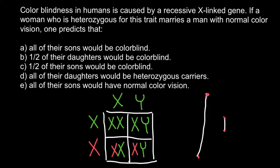Now we can answer our question. Answer A — all of the sons would be colorblind — this is not true; only 50% of the males would be colorblind. Answer B — one half of the daughters would be colorblind — still would have normal vision. Answer C — one half of the sons would be colorblind — this is true; 50% of the male progeny would be colorblind.